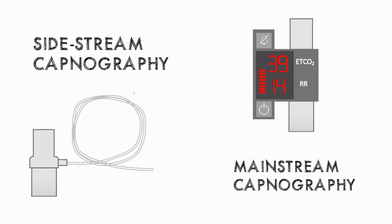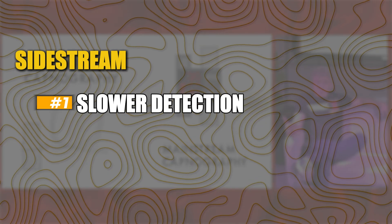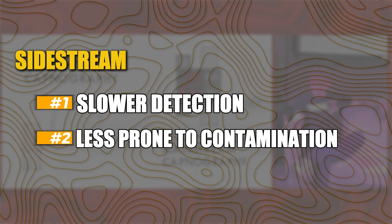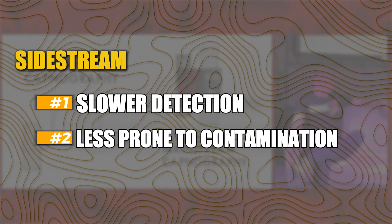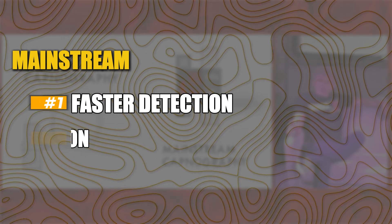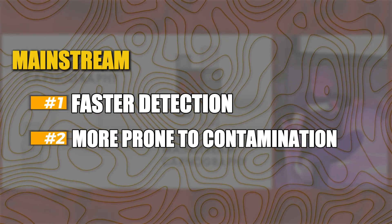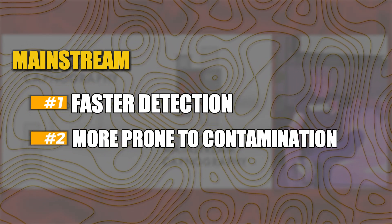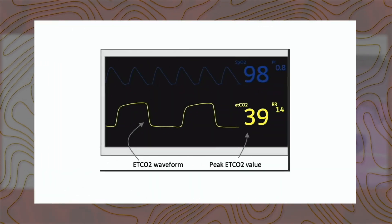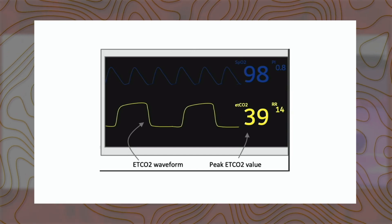The quantitative devices are sidestream and mainstream capnography. Functionally they're essentially the same with slight nuances. Sidestream has a delay — you'll intubate and it'll be a couple of breaths before you see end-tidal pickup, whereas mainstream is pretty instantaneous. If the airway is full of blood or secretions, mainstream is far more likely to get contaminated and stop working.